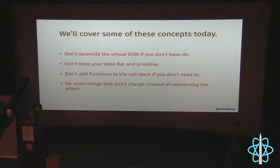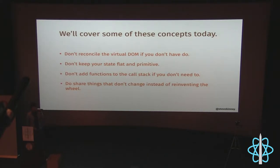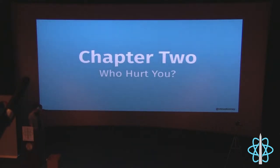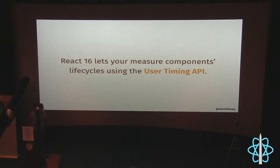So what could we not do? Maybe we don't reconcile the virtual DOM if we don't have to. Keep your state flat and primitive. Don't add function calls you don't need. Share things — don't make bespoke things as you go along. Chapter two.